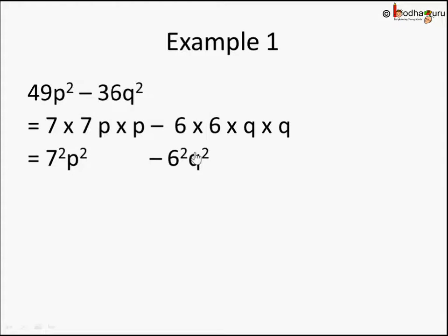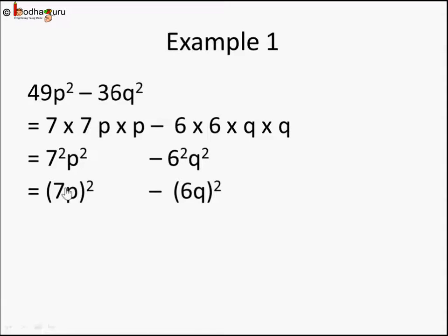You can skip the expansion step and write it directly, but writing it out makes it very clear that there are squares here. Now by the exponent rules, x²y² can be written as (xy)², so 7²p² = (7p)² and 6²q² = (6q)². This means the entire term 7p plays the role of a, and 6q plays the role of b in Identity 3.